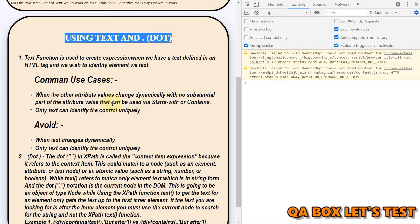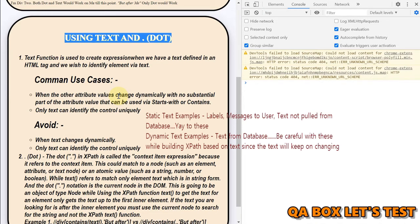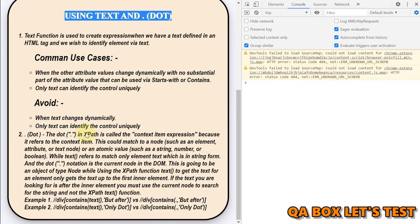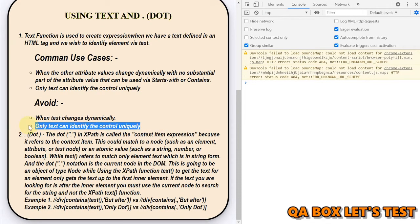Common use case when other attribute values changes dynamically and there is no consistency, there is no pattern. And therefore you can't go for IDs and you can't build any logic around it because there is no pattern. Then text is the only solution. When to avoid it, when text changes dynamically, like I mentioned in the last video. That's not a limitation, it's a mistake on my end. So kindly ignore this.